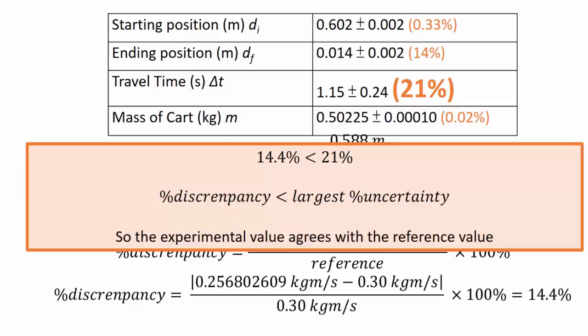As we saw from before, that means we have a fairly large fuzzy scatter shot, part of which overlaps with the target, so we can say that the experimental value agrees with the reference value.